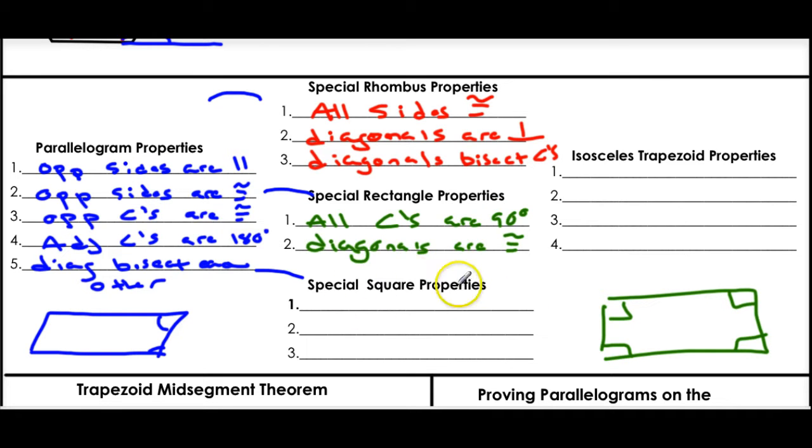The special square properties, well, what makes a square a square? It actually is just a combination of the parallelogram properties. It's a parallelogram, so it has all of those properties. It has all the properties of a rhombus, so all the sides are congruent, the diagonals are perpendicular, the diagonals bisect.